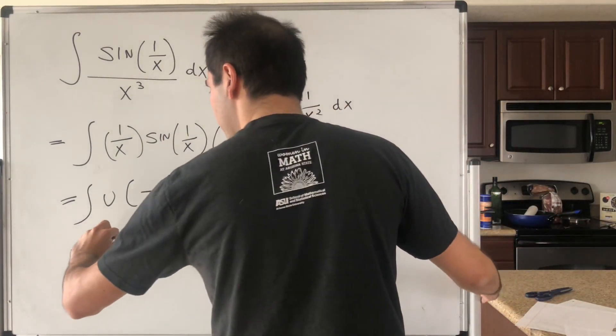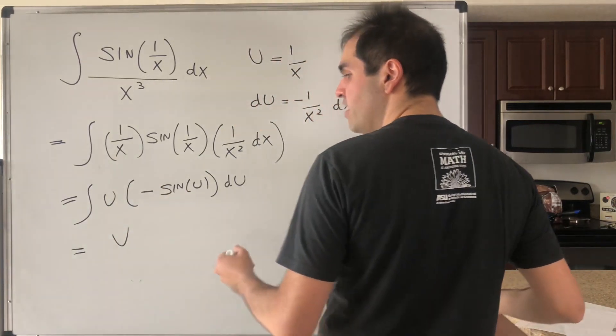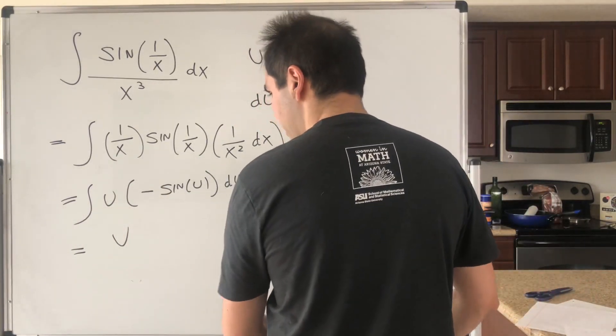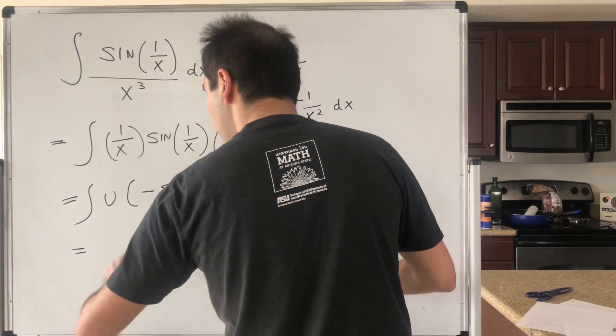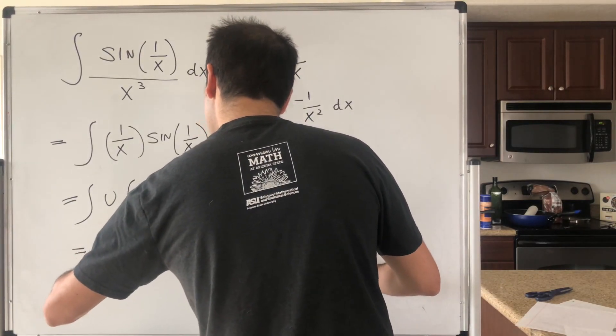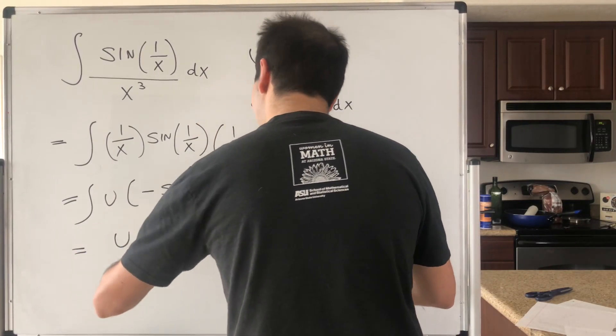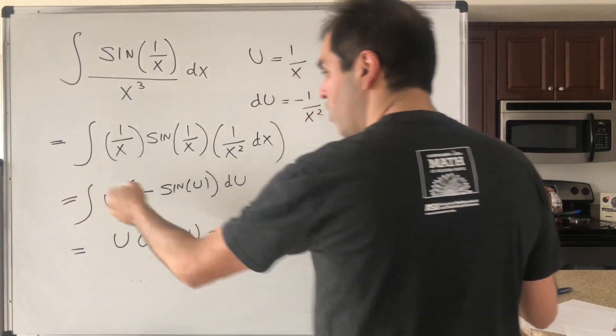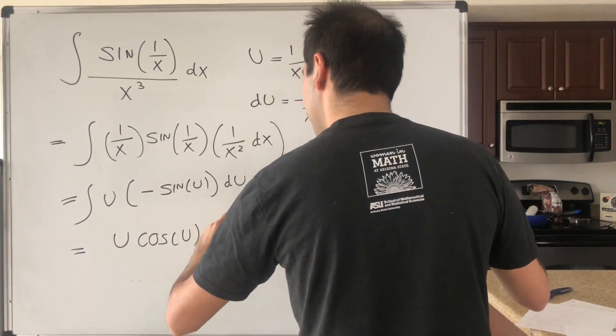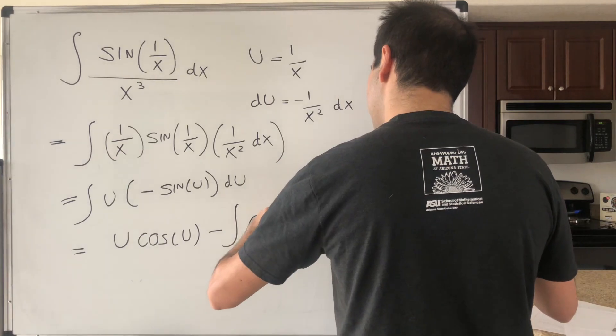I think we get u, the antiderivative of minus sine is cosine. So u cosine of u minus integral of 1 and then cosine of u. So minus integral of cosine of u du.